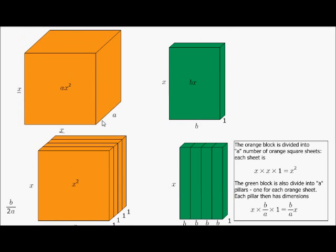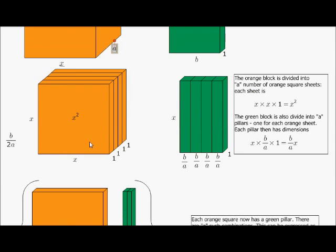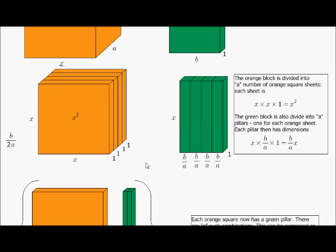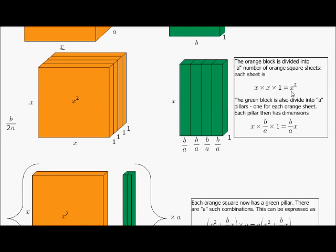Which means for every — let's say a is 4, like in this example — I'm going to divide my block into 4 sheets, each with a width of 1. There I've got my 4 sheets. Each sheet now has the dimensions x by x by 1, which means the volume is x squared times 1, which is just x squared. That's the volume of each sheet.